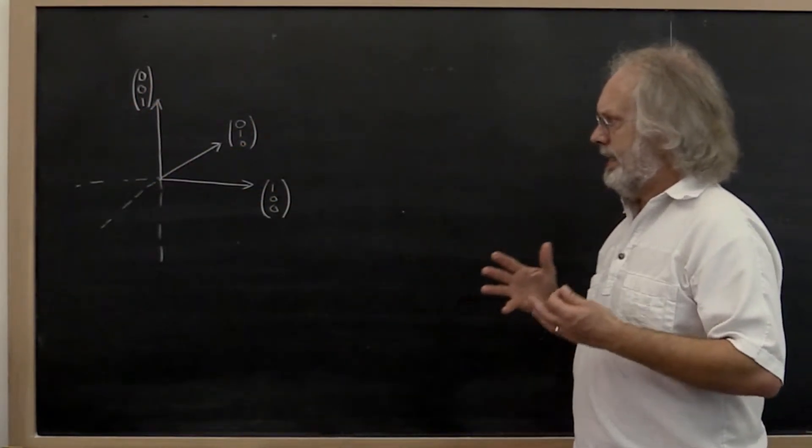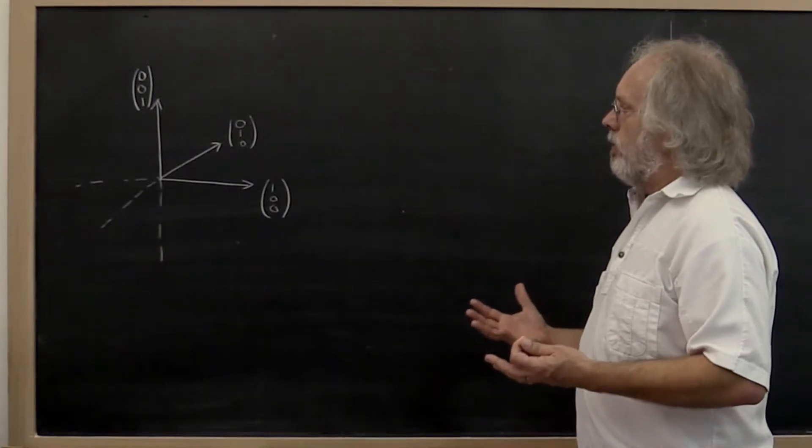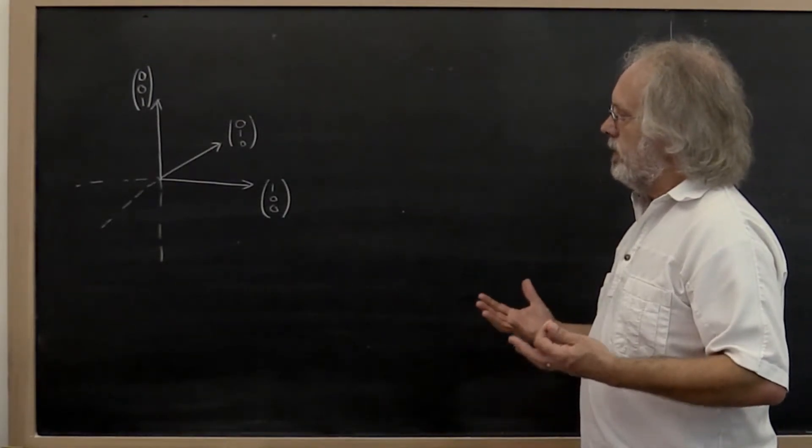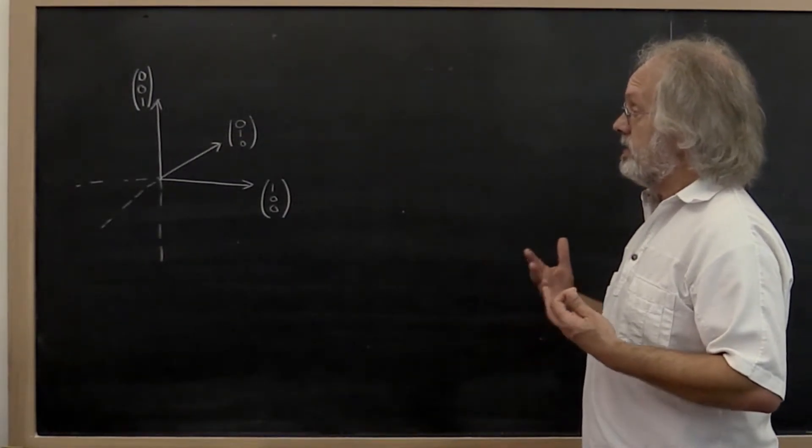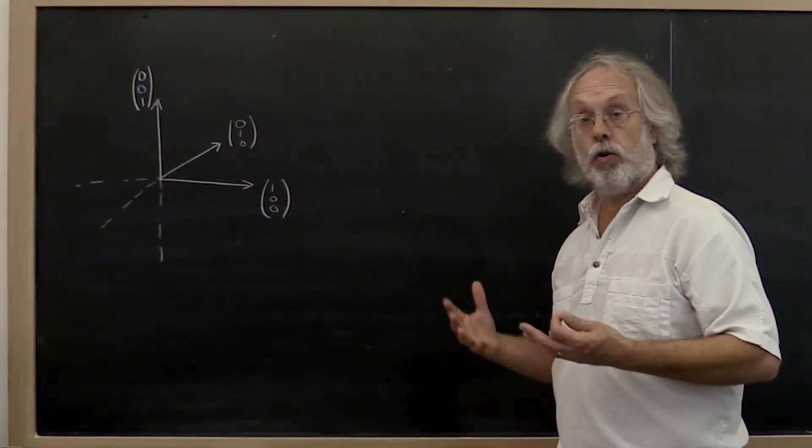Now it's more than that these vectors are of length one. The other nice property of this set of vectors is that they are orthogonal to each other.